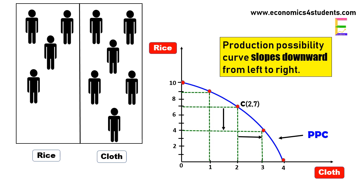And the economy will now produce three units of cloth and four units of rice and move to point D on production possibility curve.